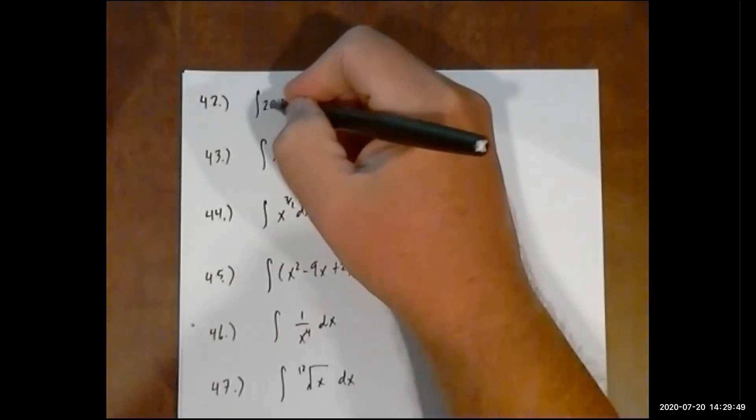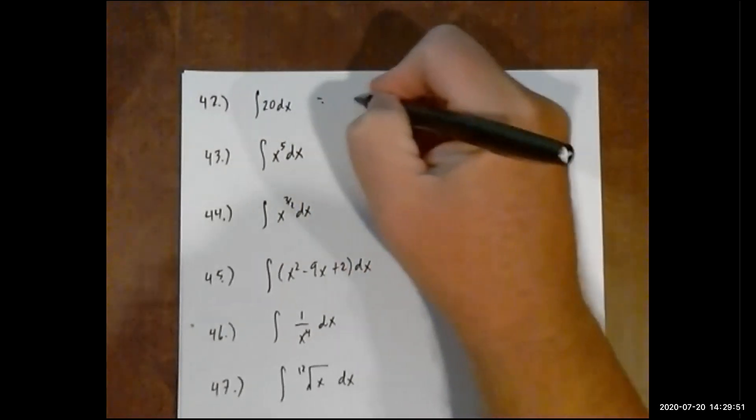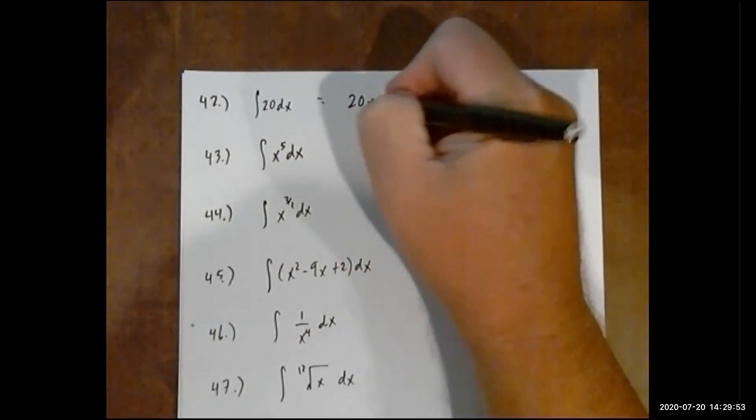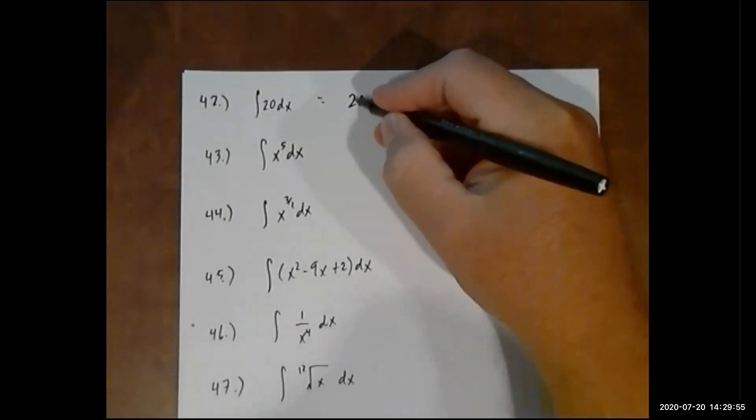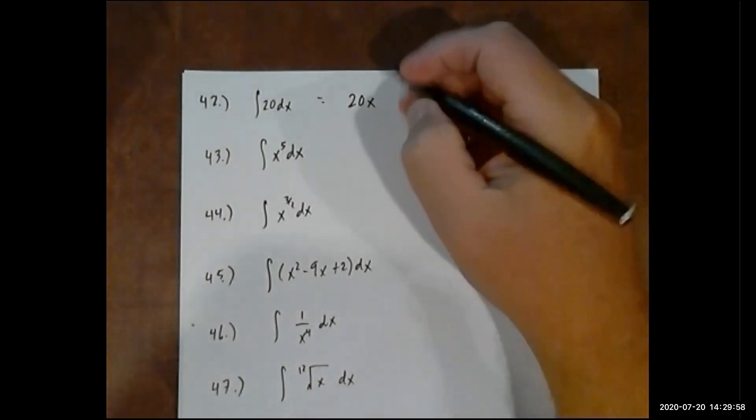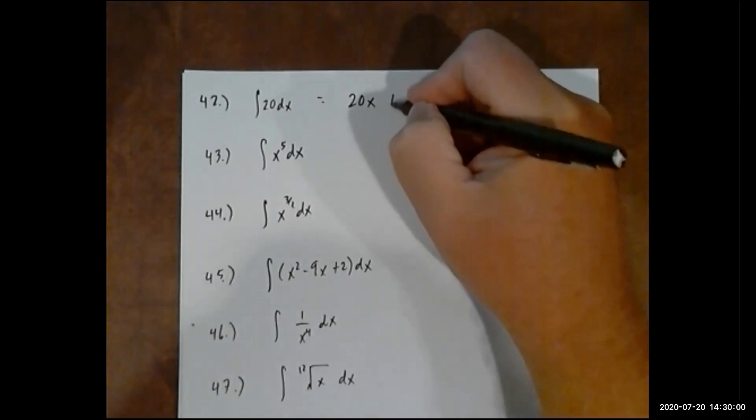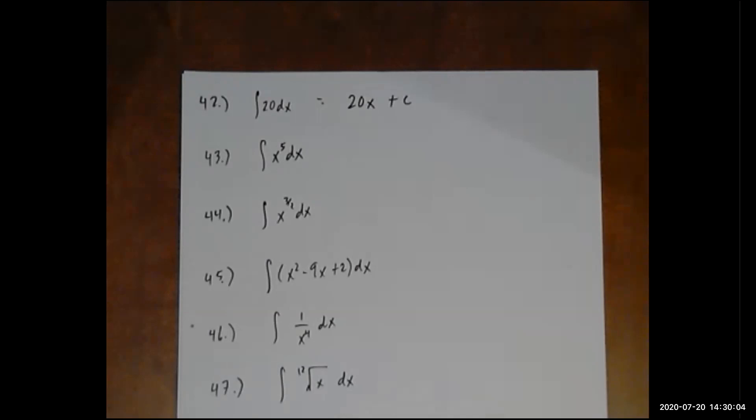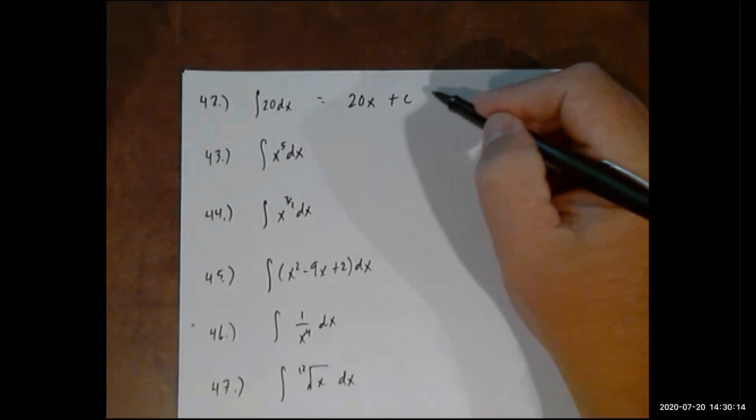If we just have a number here, you take the number times the variable, in this case x. And here's the key, and sometimes even I forget, you always have to put in plus c, where c stands for a constant. If you just enter 20x, it's going to count it wrong. It has to be 20x plus c.